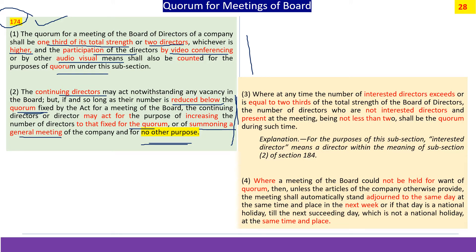Third is the impact of interested directors exceeding two-thirds. Since quorum is one-third of the total strength, if interested directors exceed two-thirds we will not be meeting the quorum. The section says if quorum is adversely affected by interested directors, the disinterested directors will form a quorum provided their number is not less than two, because to form a meeting you need minimum two people.